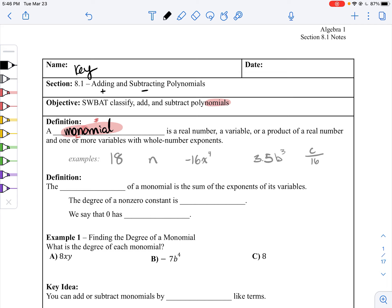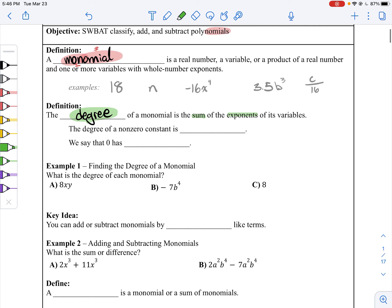The degree of a monomial is going to be equal to the sum of the exponents of its variables. So if you have multiple variables, you need to add them all up together. Degree means exponents.